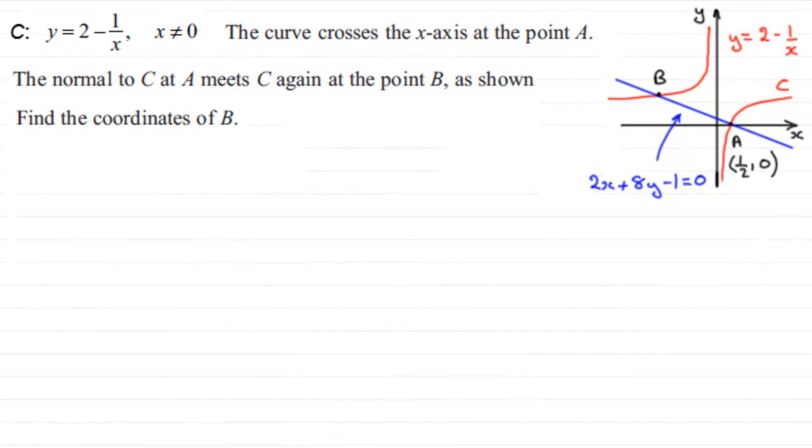Now this last part of the question, we're told that the normal to the curve C at the point A, that's this line here, meets C again at the point B. And we've got to find the coordinates then of this point B.